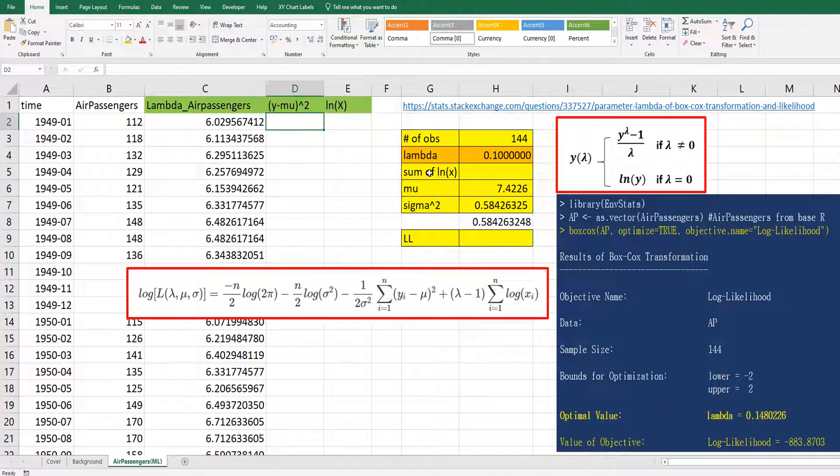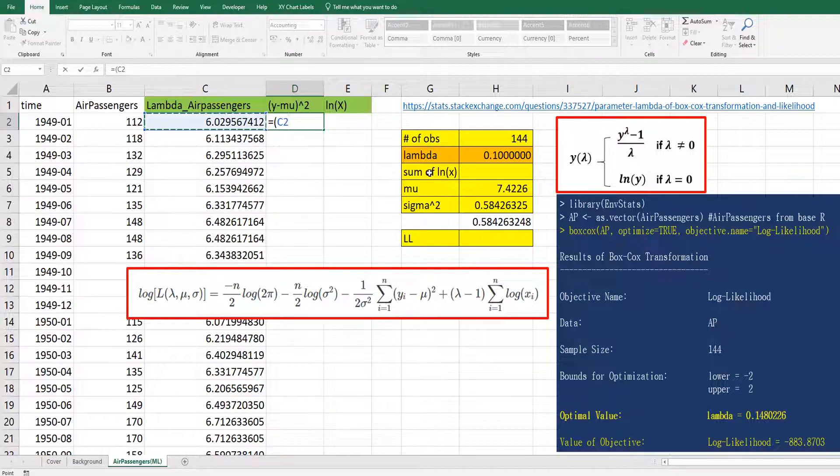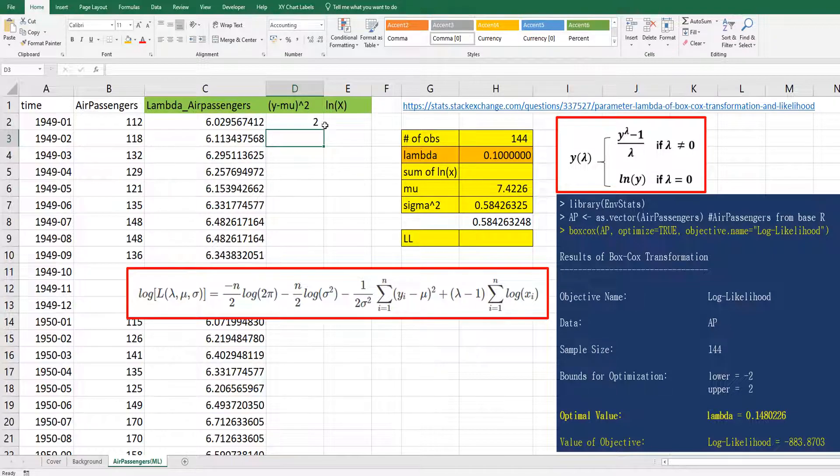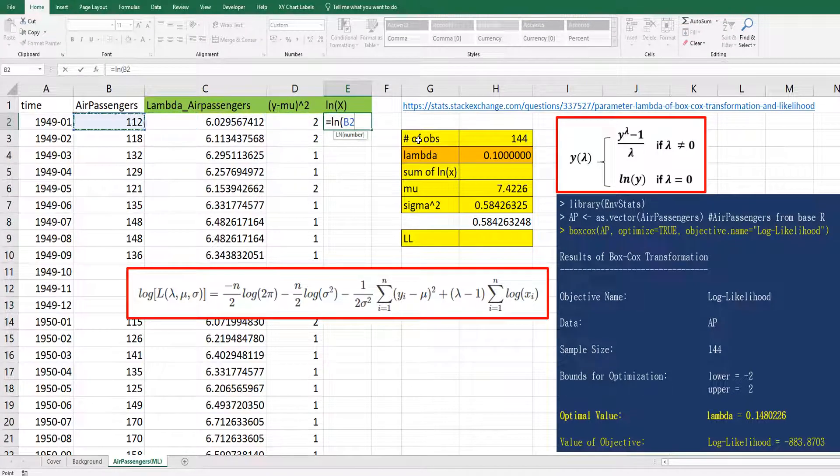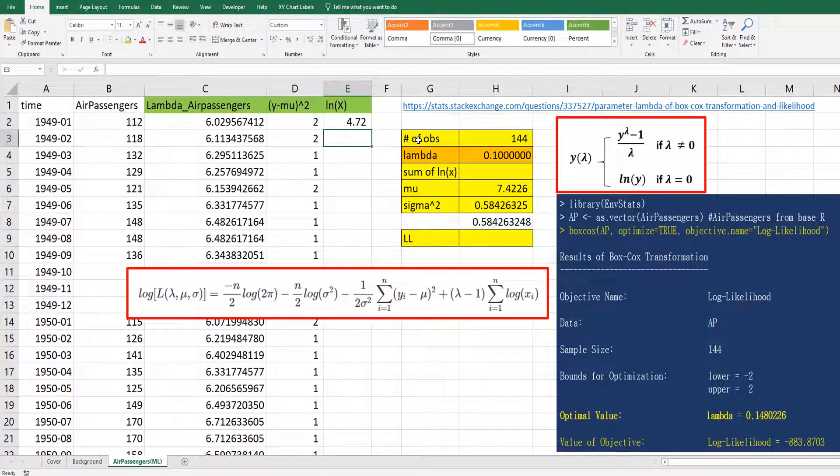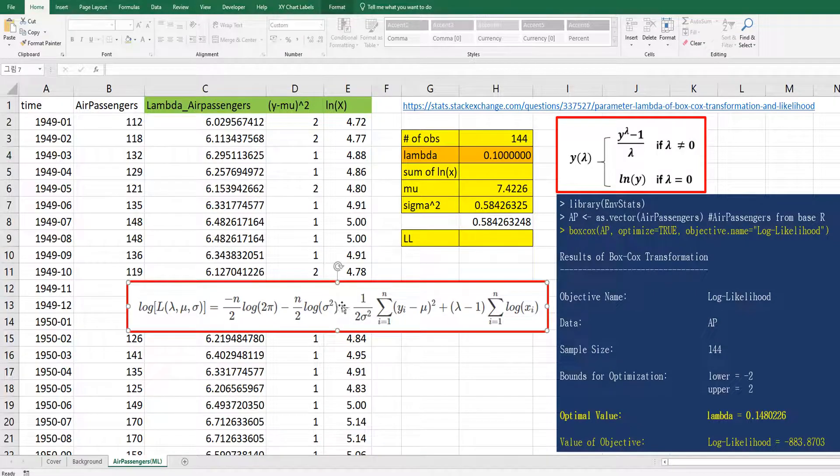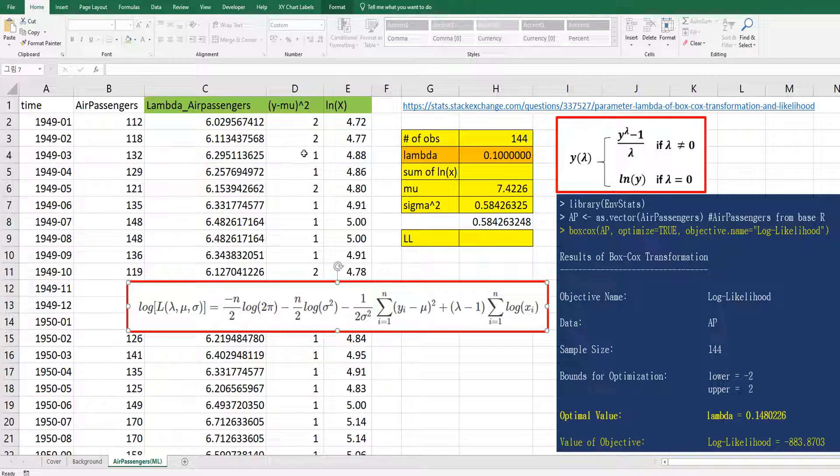Then y minus mu squared can be calculated by lambda passengers data minus mu plus F4 and squared. Log of x is ln of raw data. Because I want to use this formula, so that's why I calculated this data.